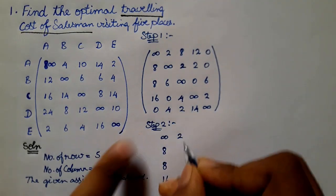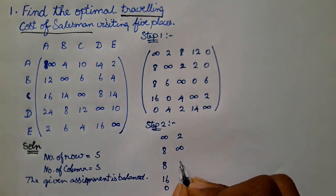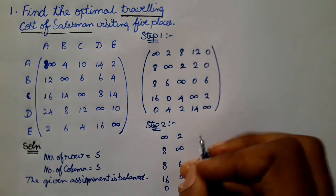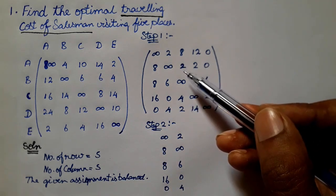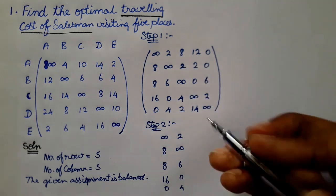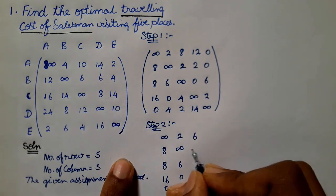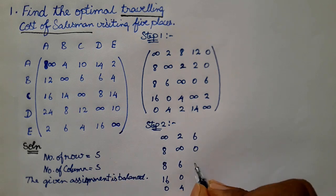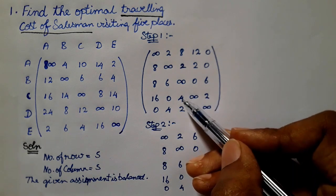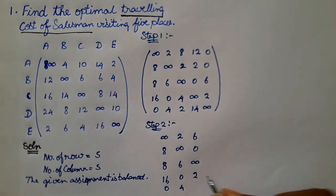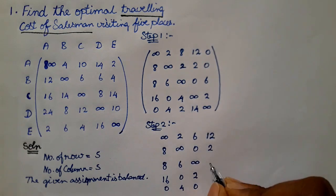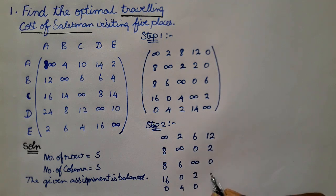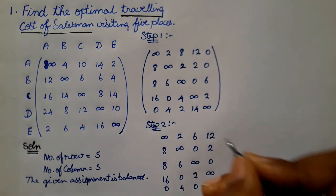The second column values are: 2, infinity, 6, 0, 4 — already has a zero. The third column already contains zeros. The fourth column values include 0, 12, 2, 0, infinity, 14 — already has zeros. The fifth column also contains 0 — no subtraction needed for any column.